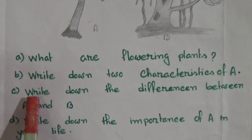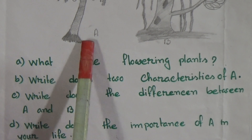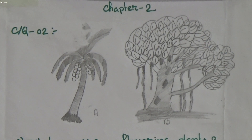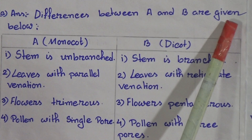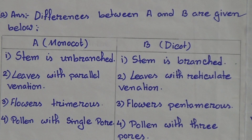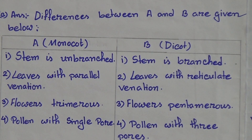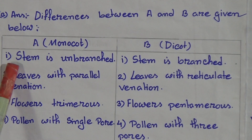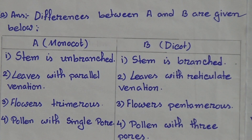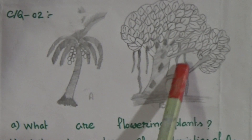Question C: Write down the differences between A and B. Figure A is a monocot plant and figure B is a dicot plant. Difference one: in figure A, the stem is unbranched, but in figure B, the stem is branched.